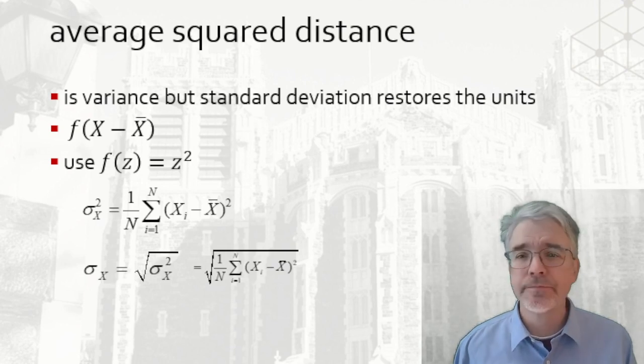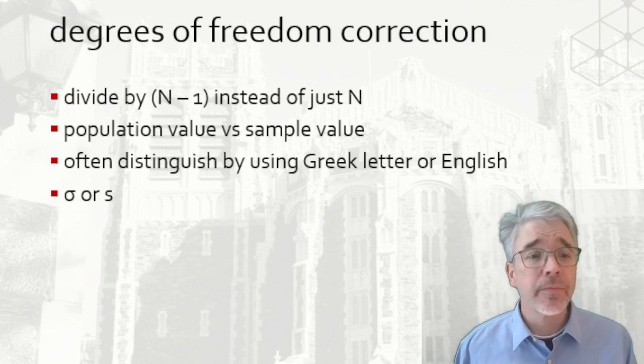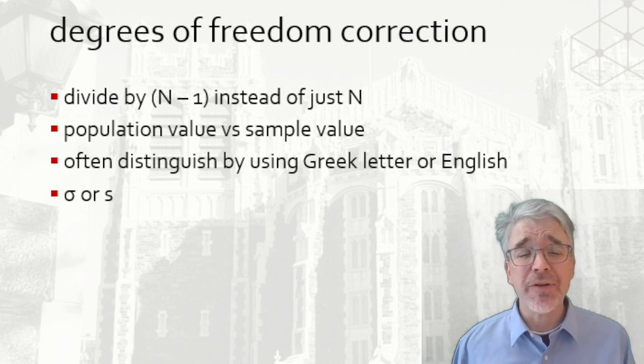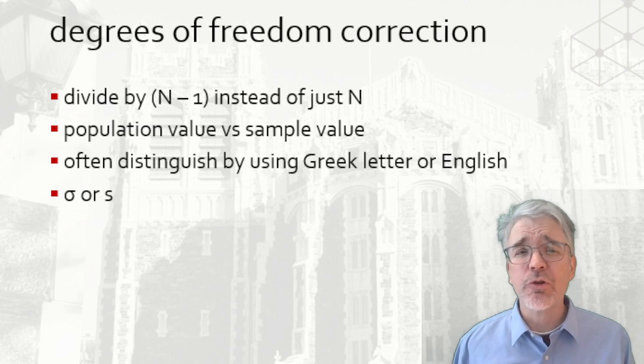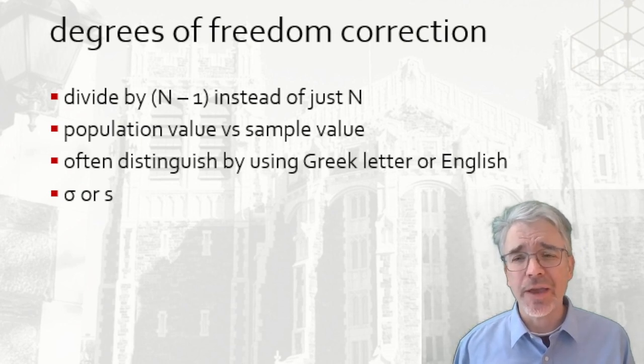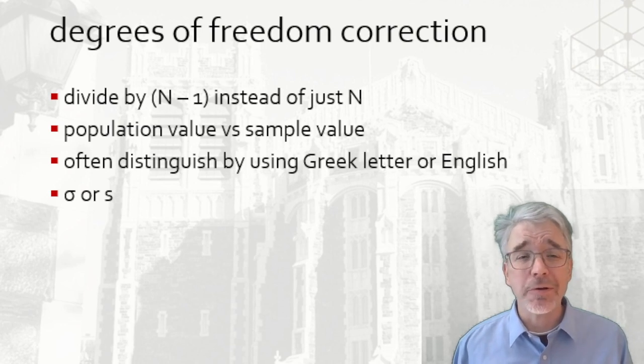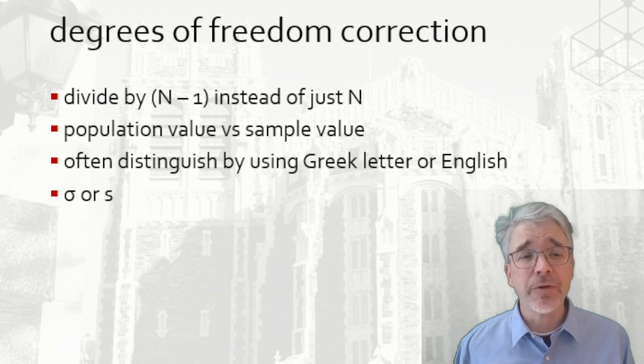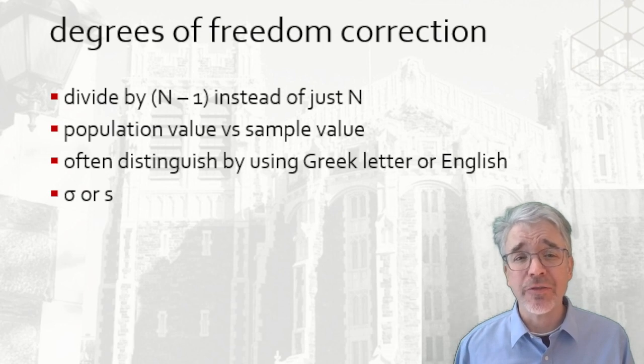The variance and standard deviation of the population divide by N. The variance and standard deviation of a sample divide by N - 1. This is referred to as the degrees of freedom correction, referring to the fact that a sample, after calculating the mean, has lost one degree of freedom. You could worry about that difference, or note that for datasets with huge N, like the BRFSS we were using with over 400,000, the difference is too tiny to worry about. Notation generally uses Greek letters to denote population values and English letters for sample values, so σ² and σ or s² and s.